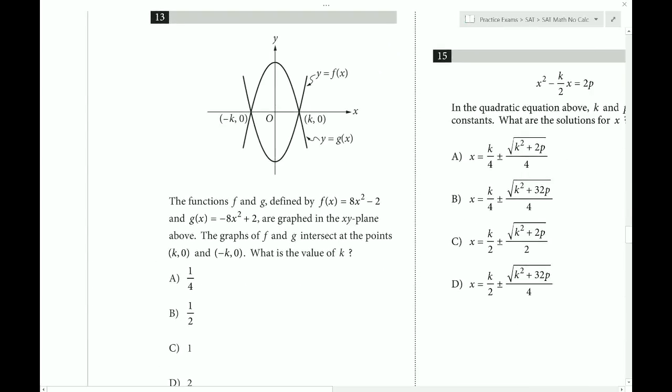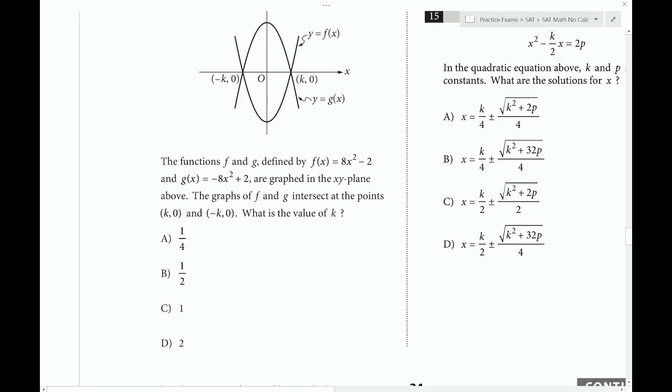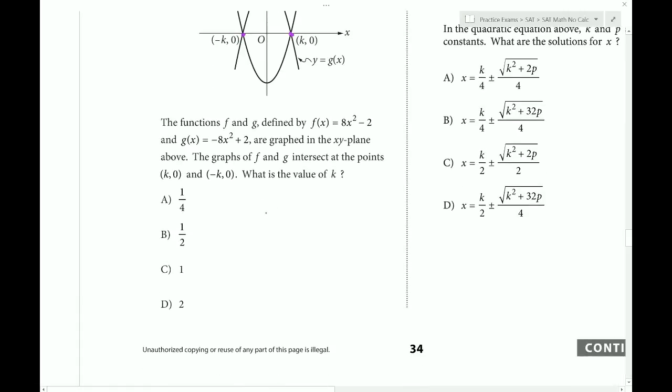Functions f and g defined by f of x equals this. And g of x equals that. Are a graph in the xy plane. For the graphs of f of g intersect the points k0 and negative k0. What is the value of k? Alright. So we want to find the intersection points of these graphs. Notice that the intersection point actually happens to line up with the roots of each parabola. So there's two ways I could do it.